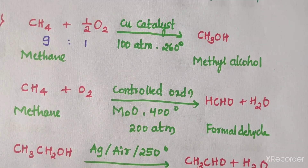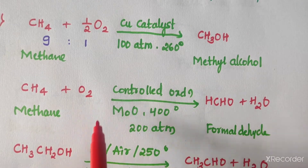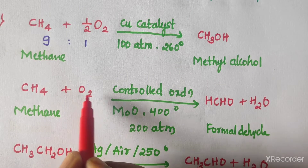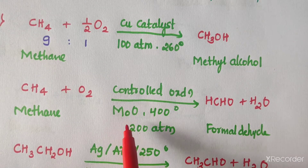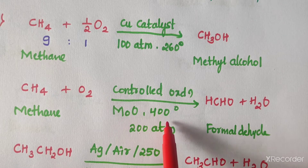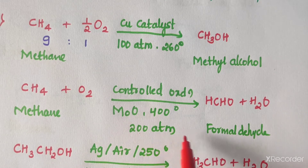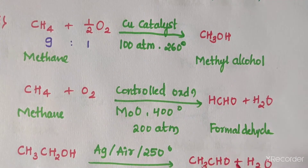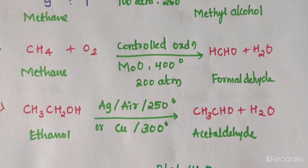The next product is formaldehyde, which can be obtained from methane by controlled oxidation. The condition is molybdenum oxide catalyst at 400 degrees centigrade and 200 atmospheric pressure. In this condition, we can synthesize formaldehyde with elimination of one mole of water.